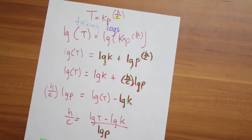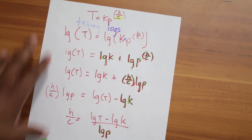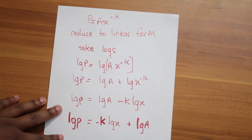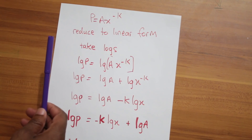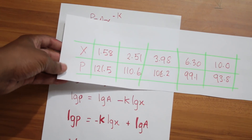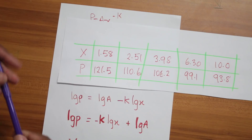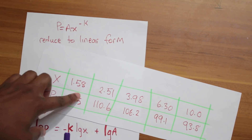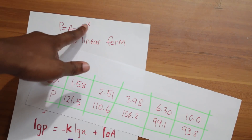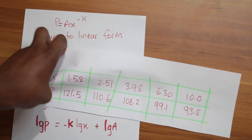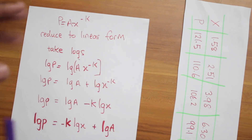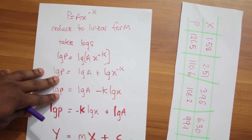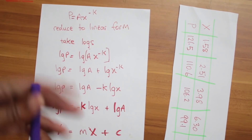You need to understand your log rules to handle that. Now the next one — this was a more in-depth question, I think 2017. They give you a table with some values, and the equation is p equals a times x to the power of negative k, where a and k are constants. They want you to reduce it to the linear form. Remember, by taking logs you can drop an exponent down into a linear form.